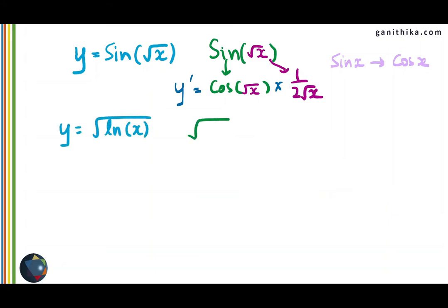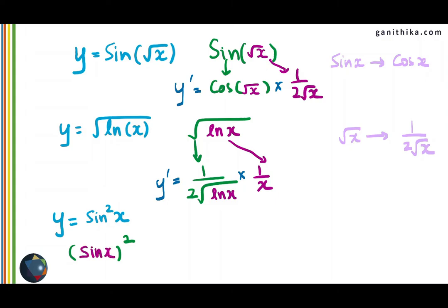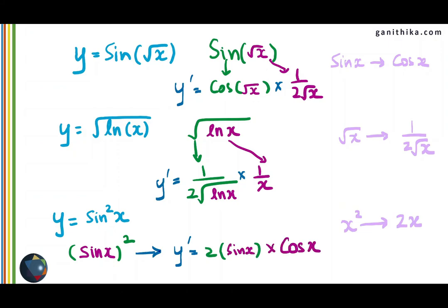Another example: square root of ln of x. The outer function is square root, the inner function is ln x. The derivative of the outer function is 1 over 2 root function, giving 1 over 2 root of ln of x. Multiply by the derivative of ln x which is 1 over x, and you get the derivative of y. You can pause the video and try this. Now, sin square x is sin x the whole square. The whole square function is the outer function, sin x is the inner function. The outer function becomes 2 times sin x, multiplied by the derivative of sin x which is cos x. Therefore, the derivative of sin square x is 2 sin x cos x, which can also be written as sin 2x.